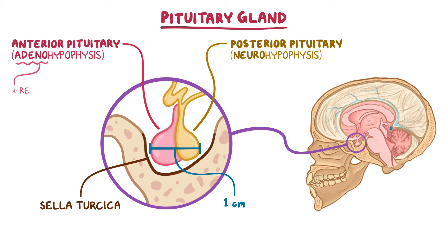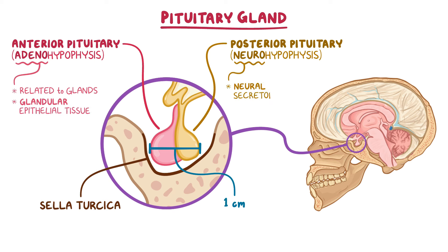Adeno means related to glands, and the adenohypophysis consists primarily of glandular epithelial tissue. In comparison, the neurohypophysis consists mainly of neural secretory tissue, since the neurohypophysis arises from a bud of nervous tissue that grows down from the hypothalamus.